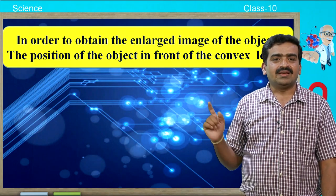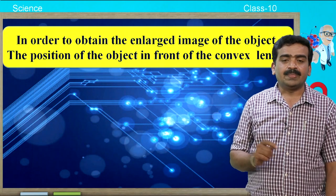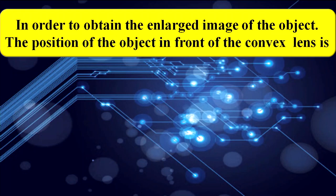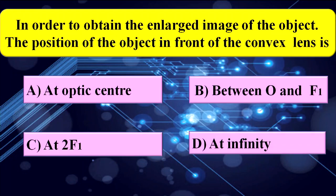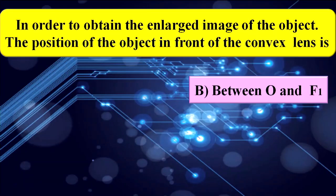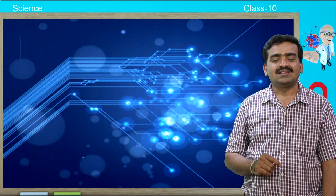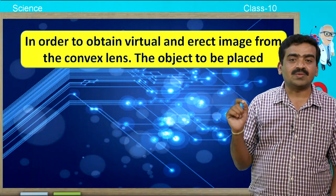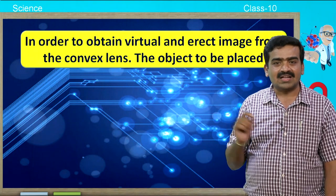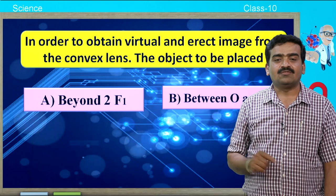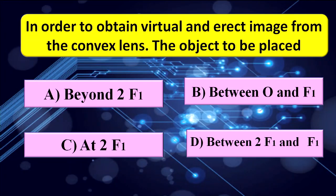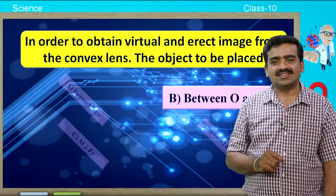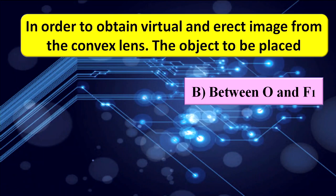The next question: in order to obtain an enlarged image of the object, the position of the object in front of the convex lens is — a) at optic center, b) between O and F1, c) at 2F1, d) at infinity. The answer is b) between O and F1. The next question: in order to obtain a virtual and erect image from the convex lens, the object has to be placed at — a) beyond 2F1, b) between O and F1, c) at 2F1, d) between 2F1 and F1. The answer is b) between O and F1.